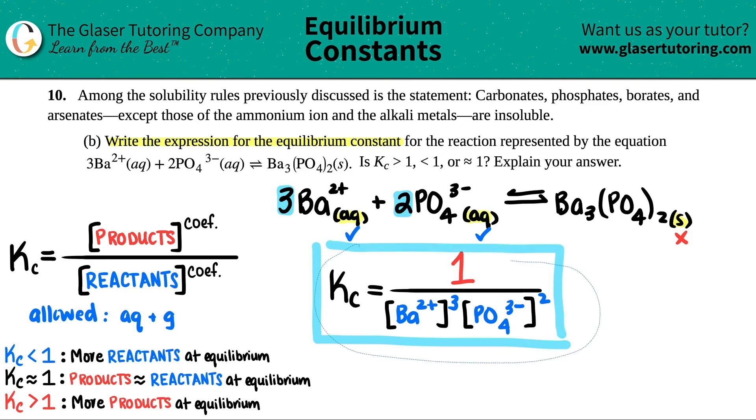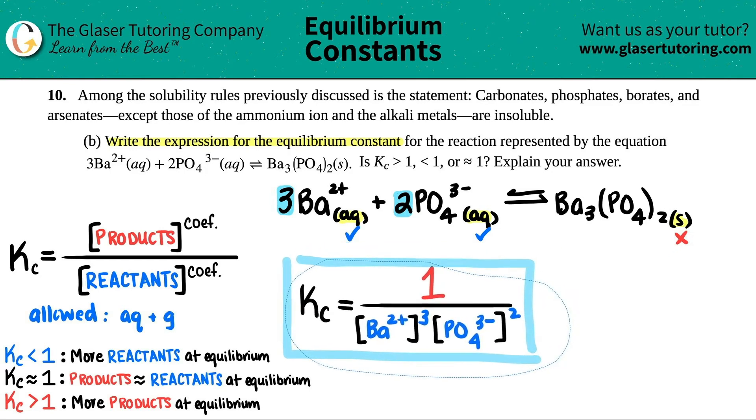Now let's answer the second part. Is that Kc value, would it be less than one, or actually would it be greater than one, less than one or roughly around one? Well, this goes back to what we got going on. Now notice that this barium phosphate is insoluble, right?